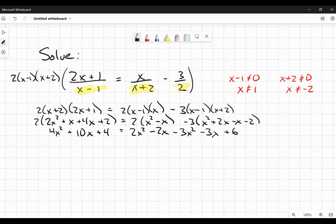Putting things together here, I have 4x squared plus 10x plus 4 on the left. But on the right I've got negative x squared minus 5x plus 6. So that motivates me to move all my terms over to the left hand side so that I have a positive square term. It'll become 5x squared plus 15x minus 2 equals 0.